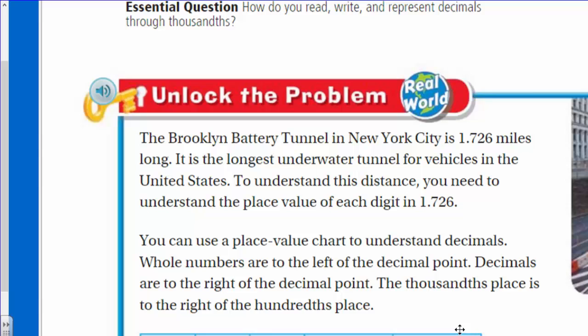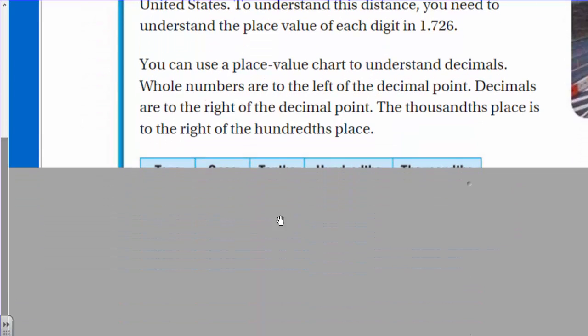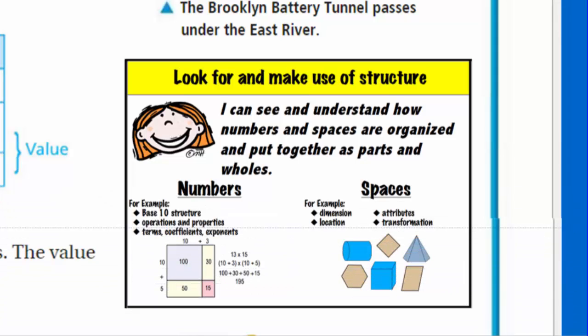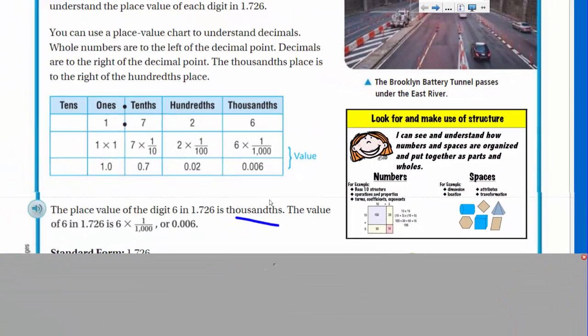Let's go ahead and see what else we have here. It says you can use a place value chart to understand decimals. Whole numbers are to the left of the decimal point. Decimals are to the right of the decimal point. The thousandths place is to the right of the hundredths place. And here's our mathematical practice number seven, which is look for and make use of structure. We're going to be looking at that structure here in our place value chart. I can see and understand how numbers and spaces are organized and put together as parts and wholes.